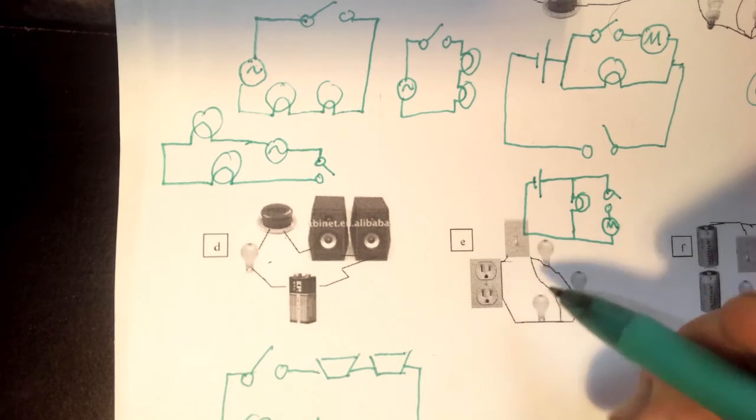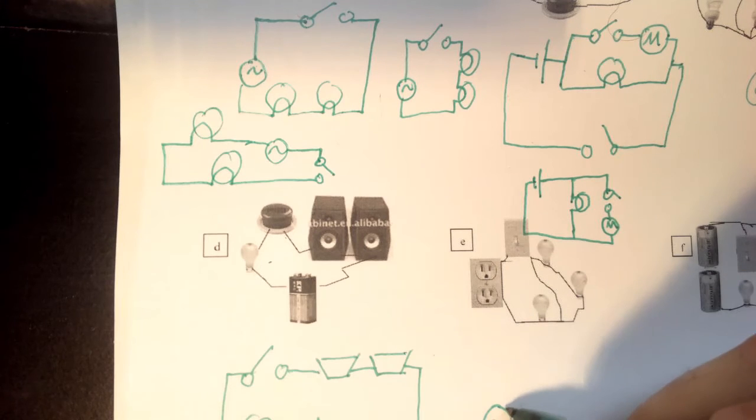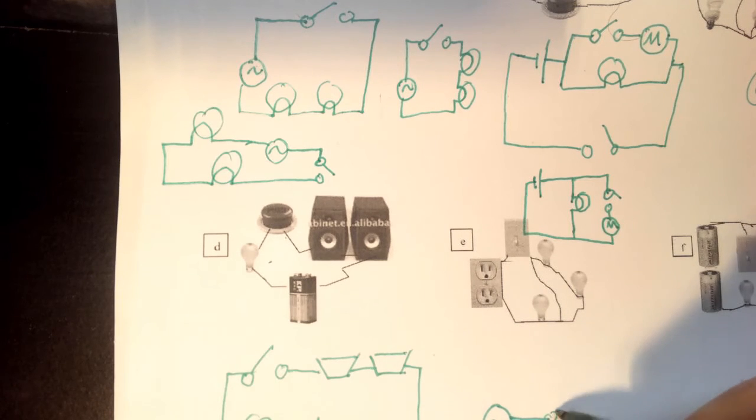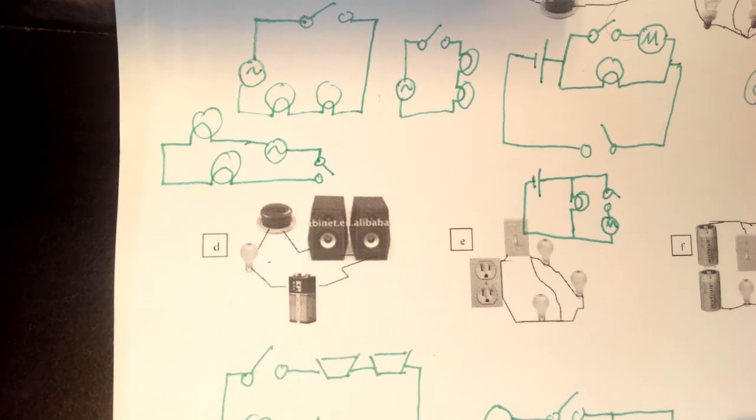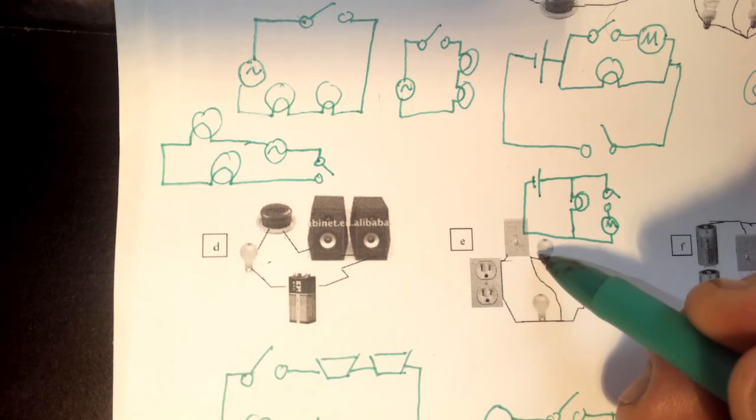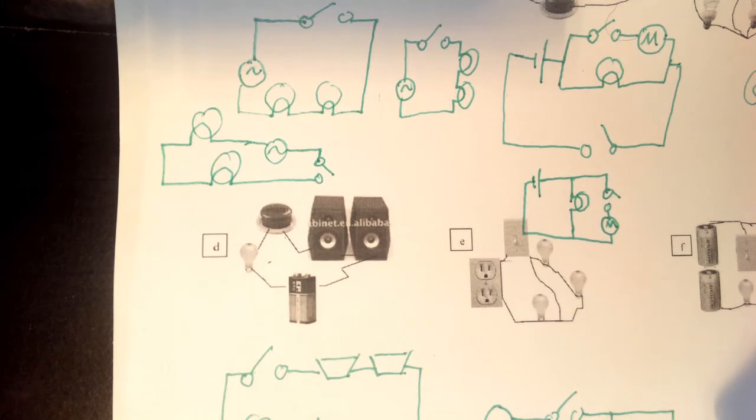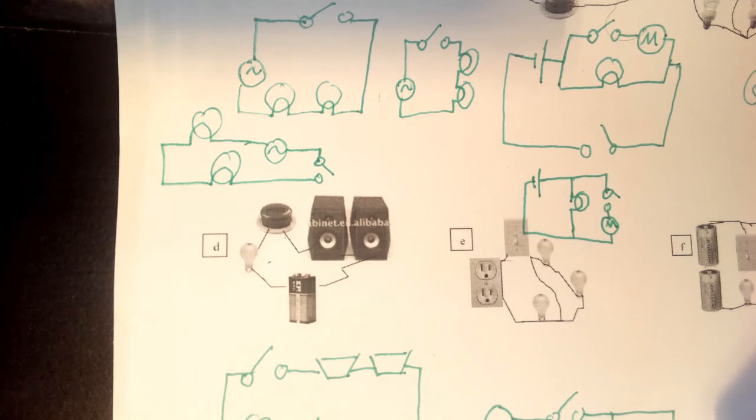Next one. An outlet, switch, a branch. Two light bulbs on one branch, one light bulb on the middle branch, and then a light bulb back to the outlet.